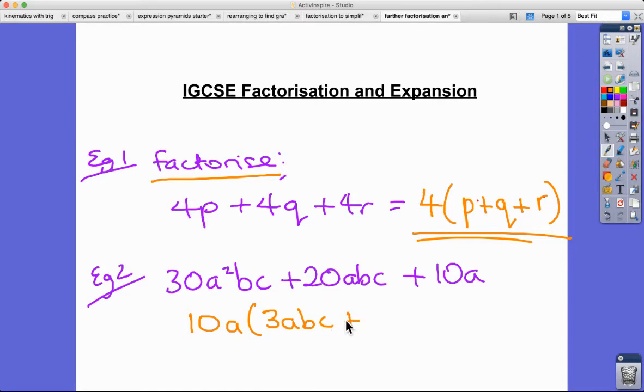We've then got a 20 to make in the second term, so that's two. We've already got the A sitting outside, so it's BC. And in the third term, many candidates struggle with this - what do we multiply 10A by to make 10A? Well, it's just one. And it was a much more complex example than the first, but we got there.